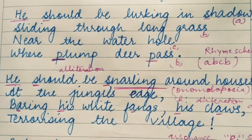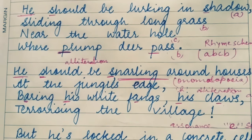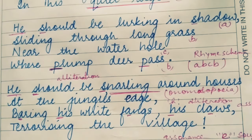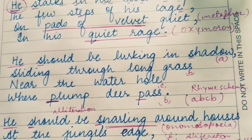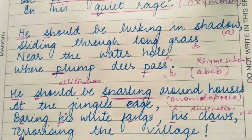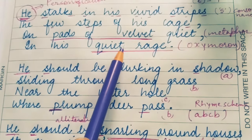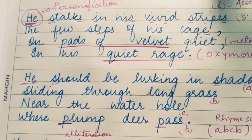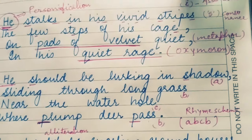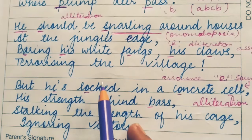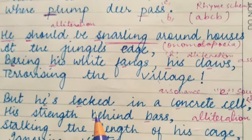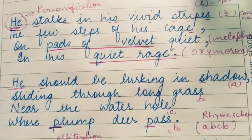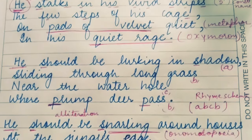Another important poetic device is imagery — using words or expressions in such a way that they create an image in the reader's mind. Throughout the poem, the poet has described the life of the tiger in a zoo, in the forest — how he preys on animals, how he terrorizes the villagers, how he moves in the jungle. The action words used by the poet create a very clear image in your mind. This is the beauty of this poem. These are the poetic devices — I hope all of you have understood. Thank you, students.